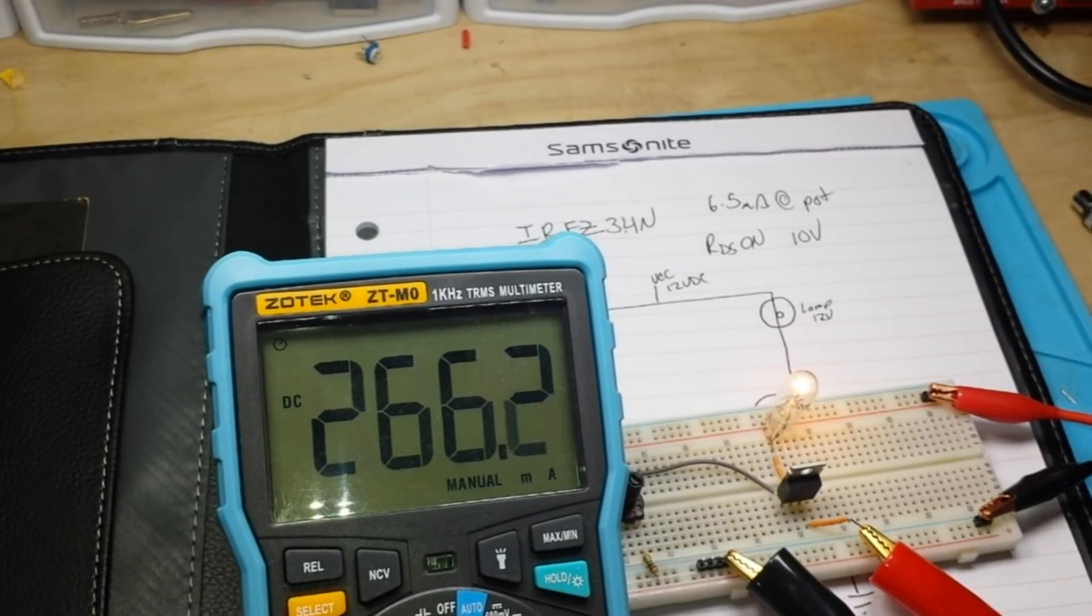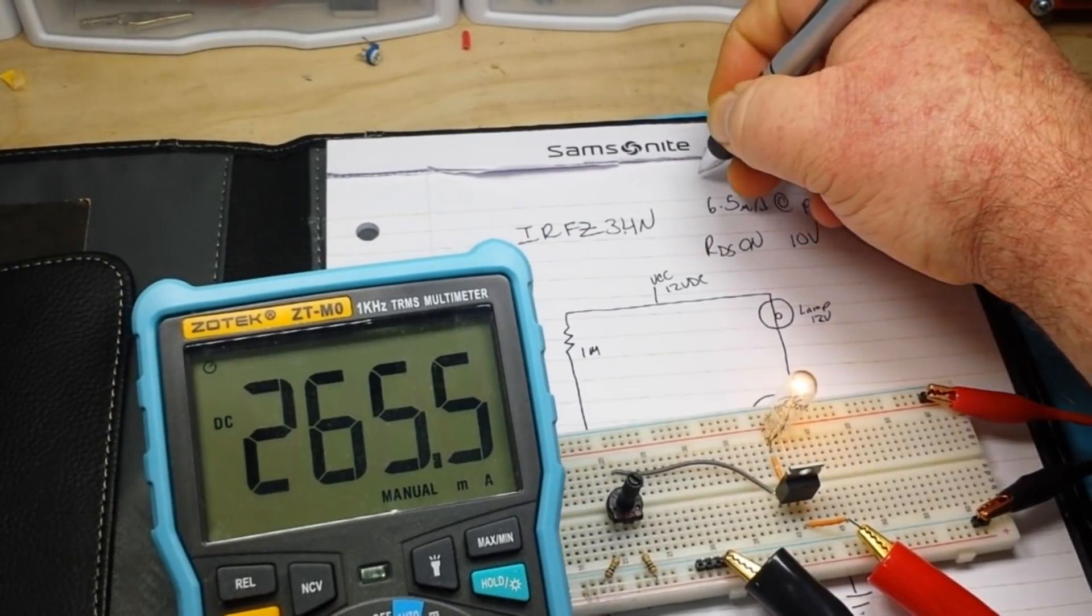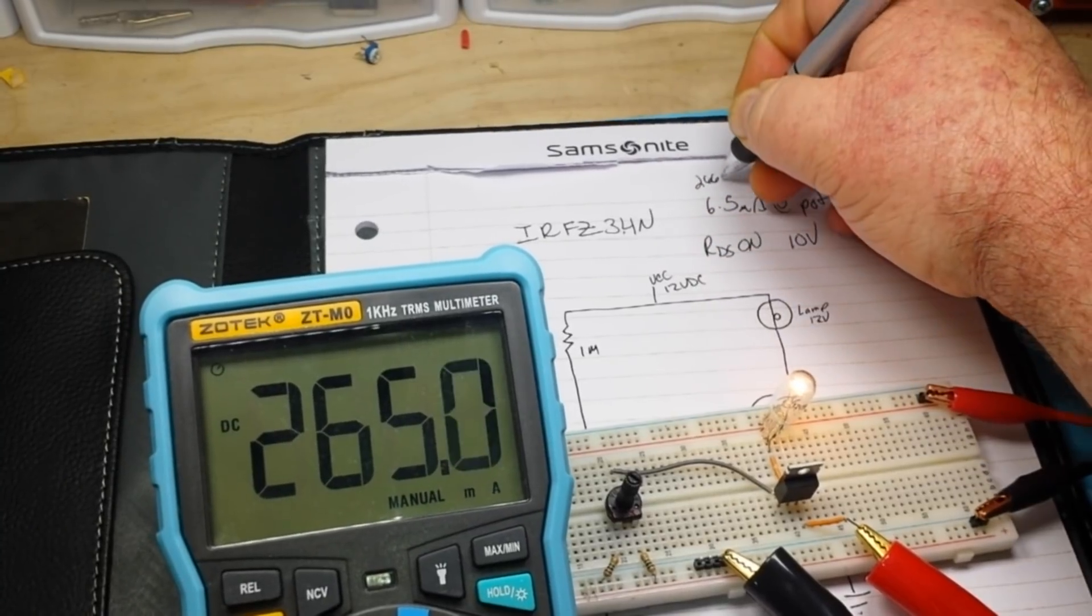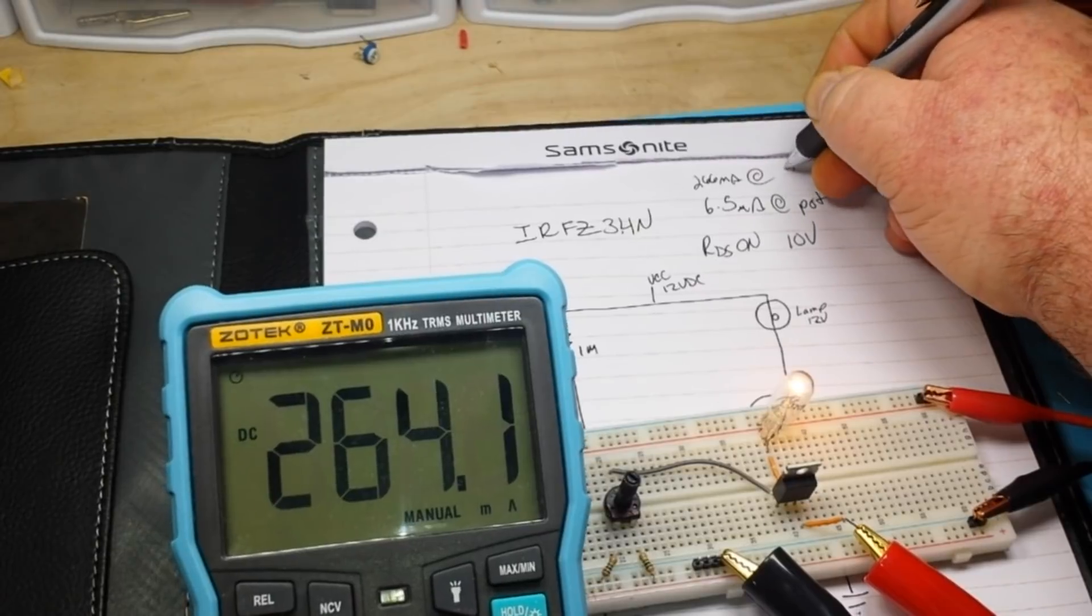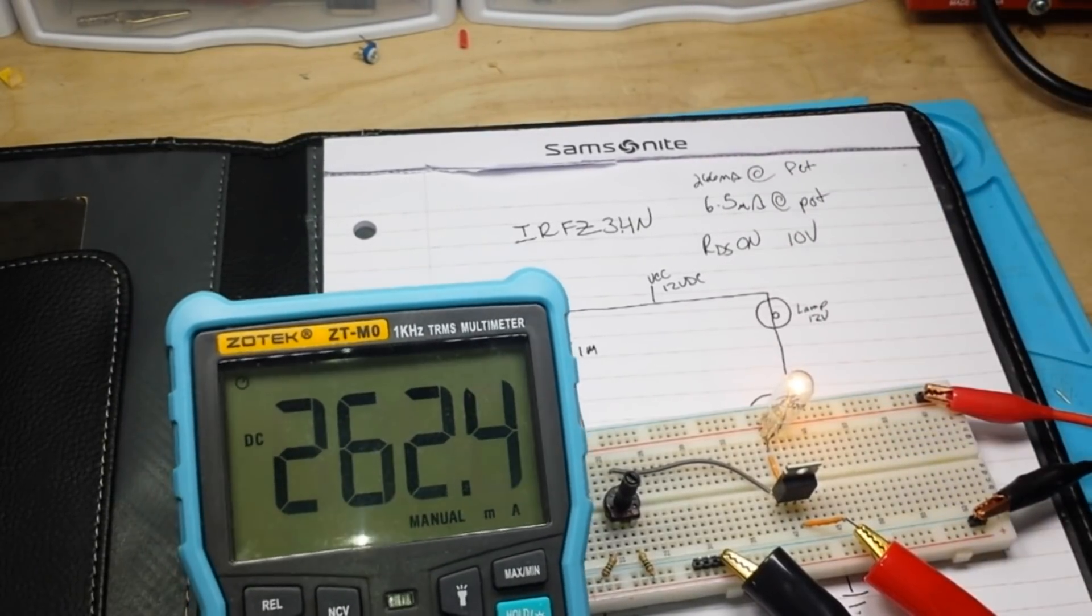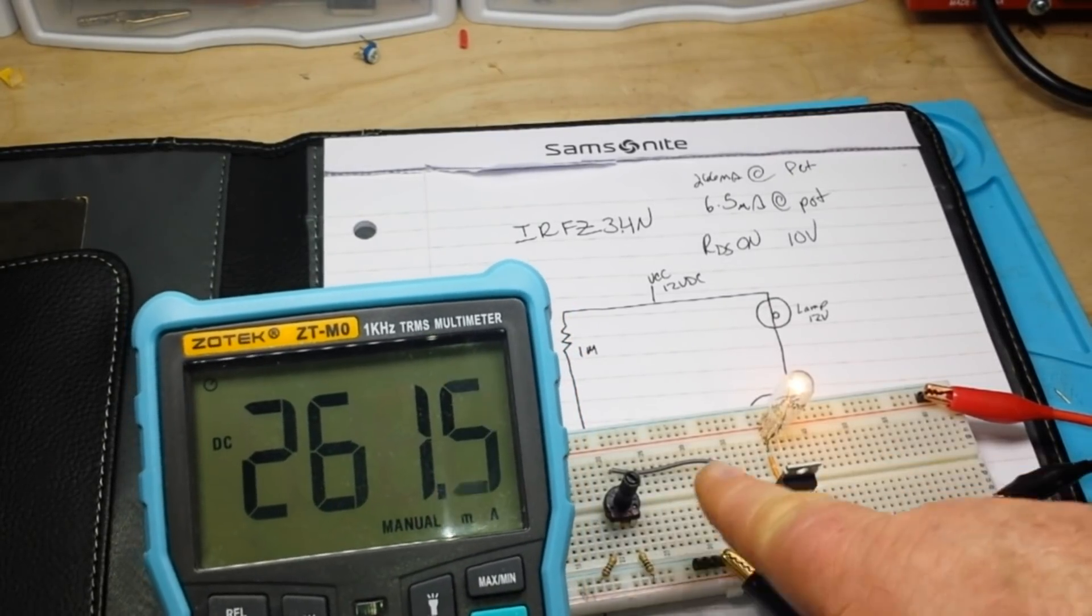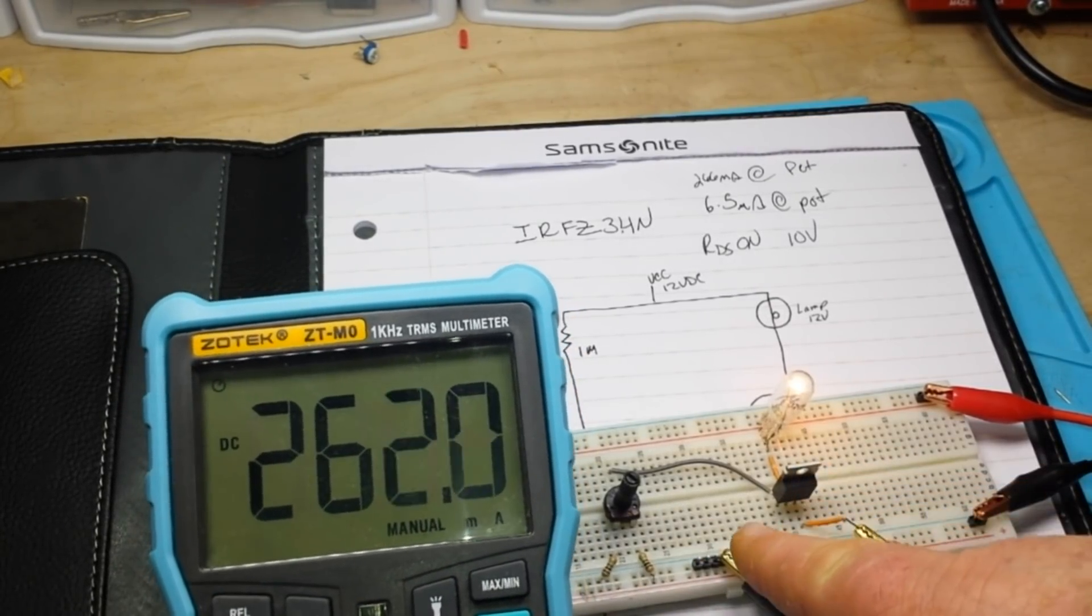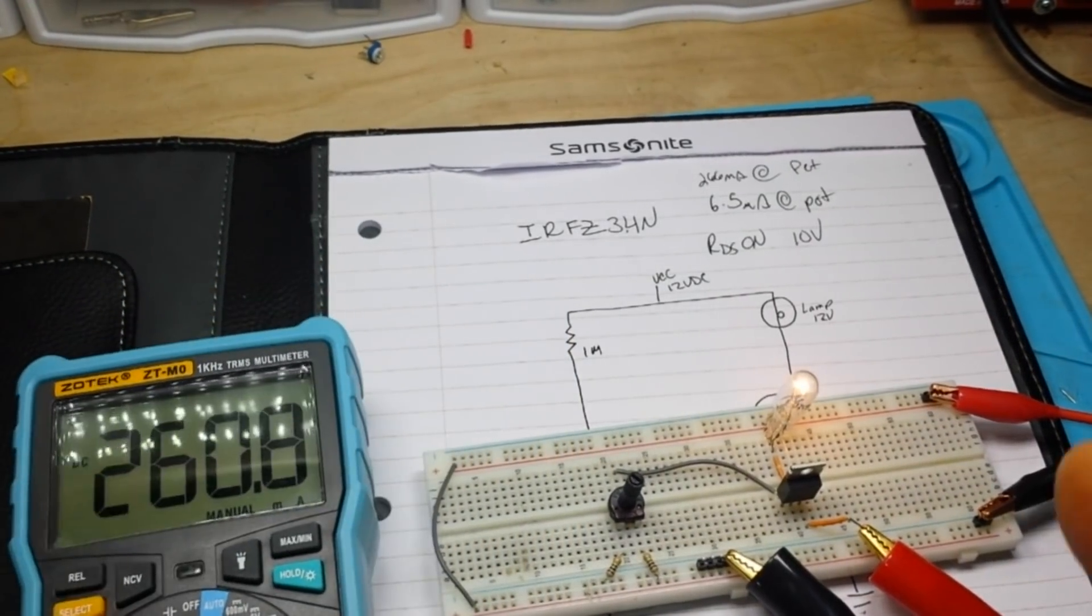Power that up. Now, we're looking at 266.3 milliamps. So, we have 266 milliamps at the FET. What's the difference? What's the multiplier there? How many more times? What's the times 10? What's the power factor? You figure it out.